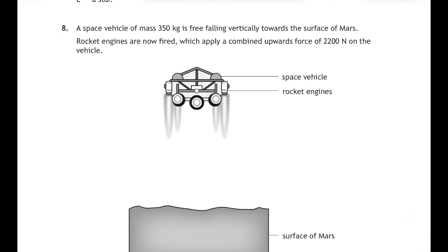Question eight: a space vehicle has a mass of 350 kilograms and it's free falling vertically towards the surface of Mars. The rocket engines are now fired, which apply a combined upwards force of 2200 newtons on the vehicle. Now, as well as an upwards force on that rocket, then it's also going to have its weight downwards. And on Mars, the gravitational field strength from your data sheet is 3.7 newtons per kilogram. So if we work out the weight of the rocket, we'll be able to get a better overall picture of what's going on here. So its weight will be 350 times 3.7, and that's 1295 newtons downwards.